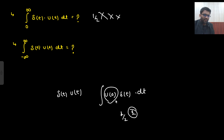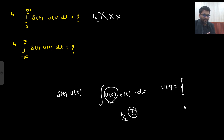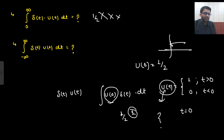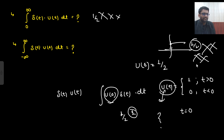Who said that u(0) is 1/2? Absolutely not. When you open the book of Oppenheim, it is absolutely written that u(t) is 1 for t greater than 0, and 0 for t less than 0. At t equals 0, you cannot even define the step function. I have seen in a lot of videos people say u(0) is 1/2 — just because the function jumps, you can take the average from 0 to 1, which is 1/2. Absolutely not — that does not make any sense.